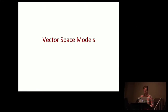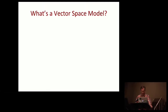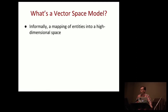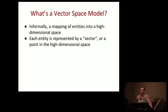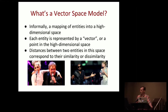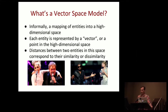Vector space models in general — what is a vector space model? It's a mapping of entities into some high-dimensional space, where each entity is represented by a vector or point. Distances between two entities represent how similar they are. For example, two artists who collaborate and share a large number of listeners get pushed together in this vector space, while artists like Kanye and Taylor Swift who don't share much audience get pushed apart.